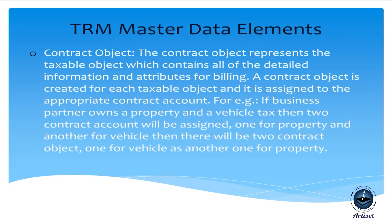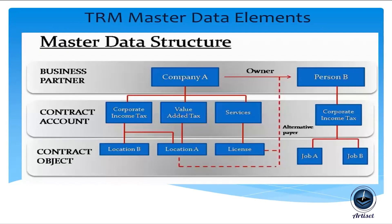If a business partner owns both a property and a vehicle, two contract accounts and two contract objects are created — one for property and one for vehicle. The master data structure is interlinked: a Business Partner can have multiple contract accounts such as corporate income tax, sales tax, or service tax, and each contract account has associated contract objects defined by location or plant.